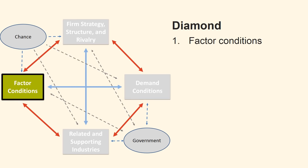The first determinant is Factor Conditions. The factors most important to competitive advantage in industries in advanced economies are not inherited but are created within a nation. To understand the role of factors in competitive advantage it is necessary to distinguish between types of factors. The first demarcation is between advanced and basic factors. Advanced factors of production are skilled labour, knowledge, capital and infrastructure. Basic factors such as unskilled labour and raw materials can be obtained by any company and do not generate competitive advantage.